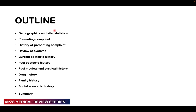Here's an outline of how we're going to be taking our history. We'll look at demographics and vital statistics, presenting complaint, history of presenting complaint, review of systems, current obstetric history, past obstetric history, medical and surgical history, drug history, family history, socioeconomic history, and we'll end with a summary and differential diagnoses.